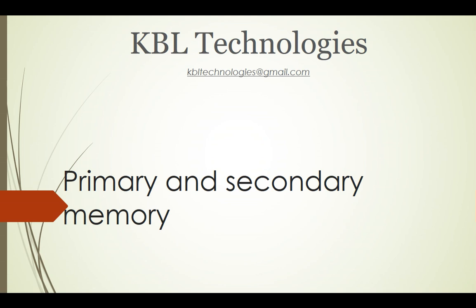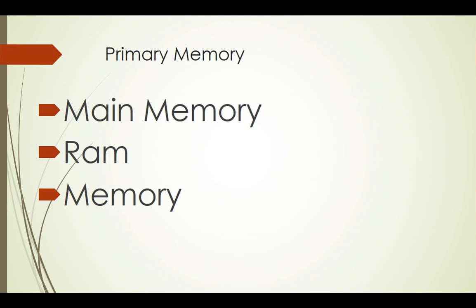Let's start with primary memory. When we say 'primary memory', 'main memory', 'RAM', or simply 'memory' — these are all the same things. When we talk about a system and say the word 'memory', we are obviously talking about the RAM, the primary memory, or the main memory. These terms are all the same, so please don't get confused.